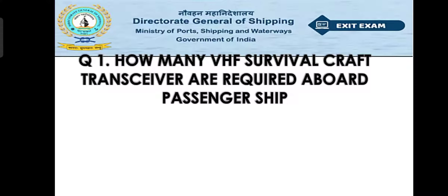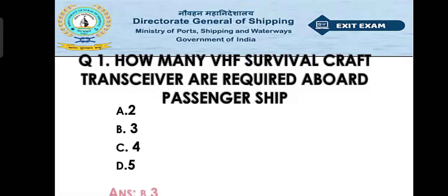Question number one: How many VHF survival craft transceivers are required on a passenger ship? Option A: 2, Option B: 3, Option C: 4, Option D: 5. The right answer is Option B, that is 3. The VHF survival craft transceivers are required in the survival craft on the passenger ship, and the minimum criteria is that there should be at least three.